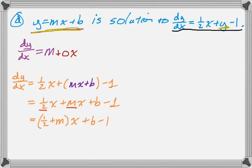Alright, so now let's equate coefficients. So the coefficient of x here is one half plus m. Coefficient of x there is 0. And that gives us the equation one half plus m equals 0. So m is negative one half.